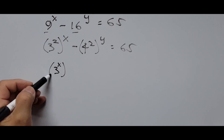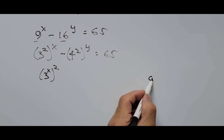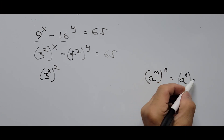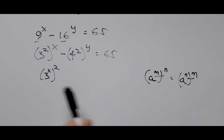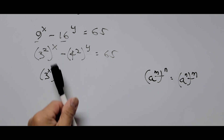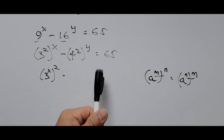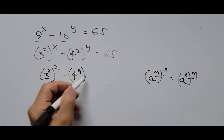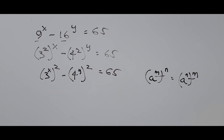From the first term, this can be written as 3 to the power of X squared. Here we're following the exponent rule: a raised to m raised to n can be written as a raised to n raised to m — the exponents can be switched. So X moves inside the parenthesis. The second term follows the same way: 4 raised to Y raised to the 2nd power, equals 65.